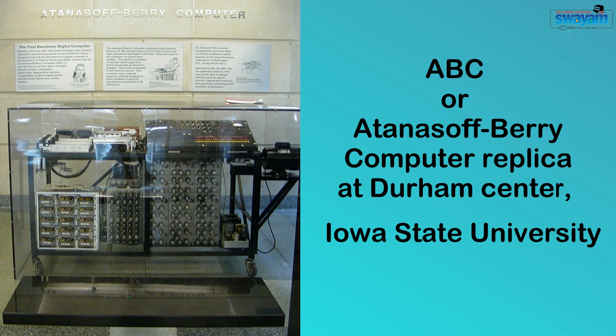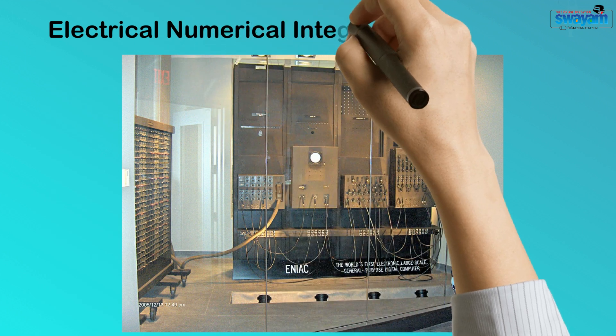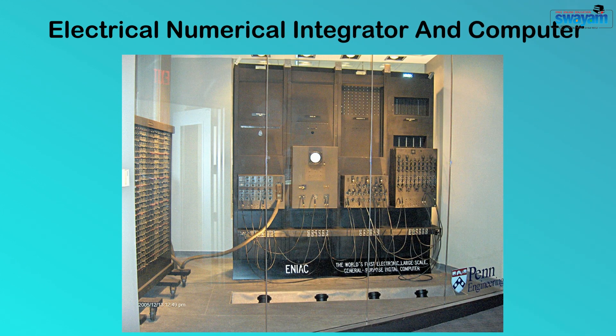This was followed by a set of computers named Colossus, which is often regarded as the world's first programmable computer that was programmed by plugs and switches. This digital computer was developed by British code breakers. Colossus Mark I was released in 1943 and an improved version Colossus Mark II was released in 1944. This is ENIAC, or Electrical Numerical Integrated and Computer, invented in 1946 and big enough to fill an entire room. ENIAC had extended the concepts learned from ABC to a large scale.